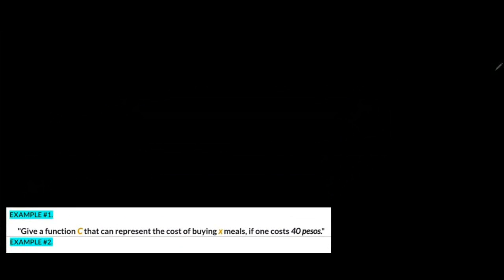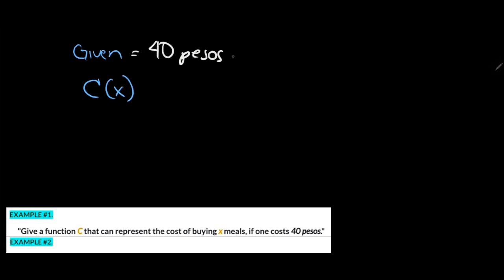To answer this, we need to list down our given information. Since according to our problem we need to construct a function C, that means we have C of X. If we were asked to construct a function D, that would be D of X — so that letter represents the name of our function. In our case, the cost of buying X meals where one meal costs 40 pesos, so our given is 40 pesos per meal.